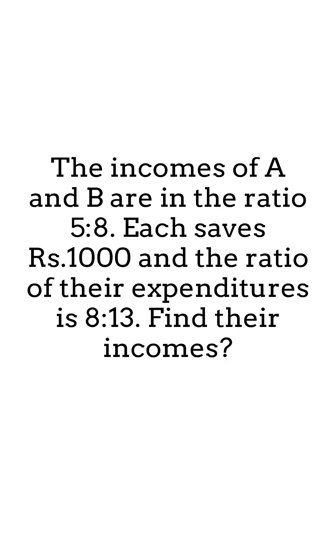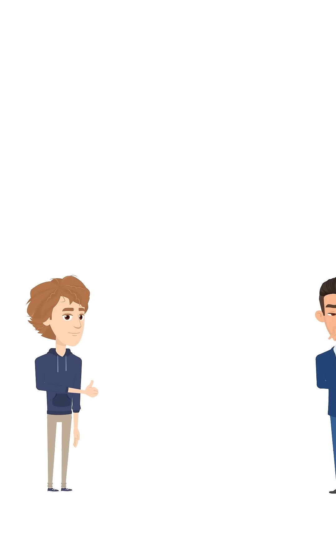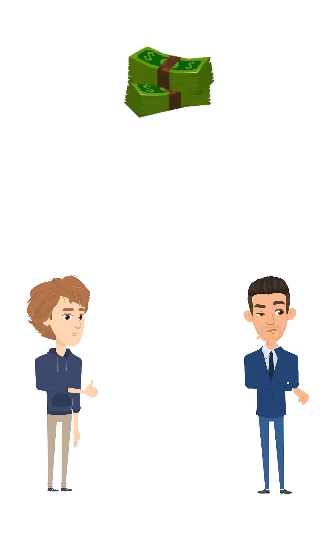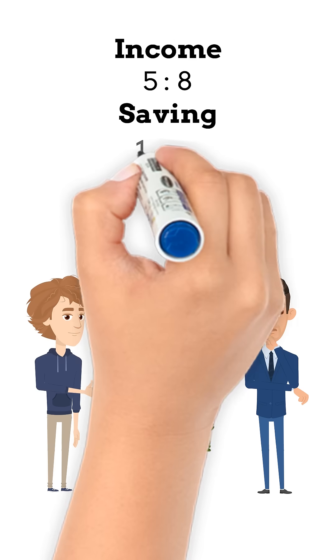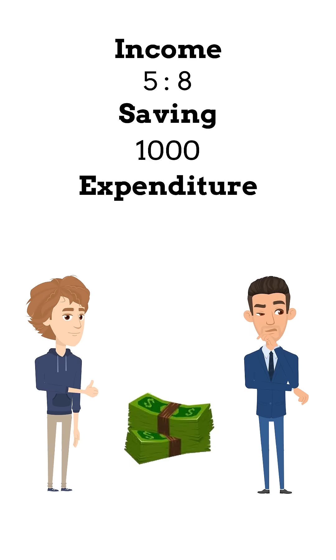Let us understand the question. There are two persons A and B whose incomes are in the ratio 5 is to 8. Each of them saves rupees 1,000 and the ratio of their expenditures is 8 is to 13. We need to find their incomes.